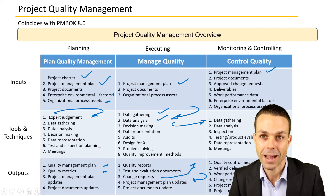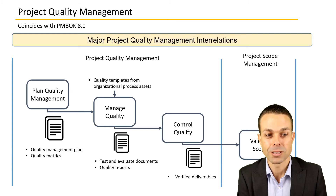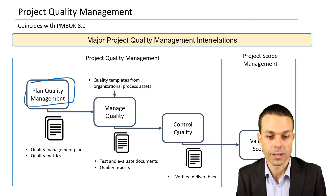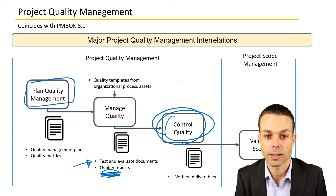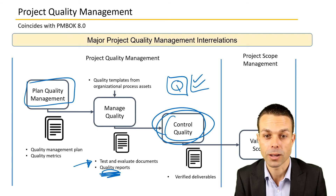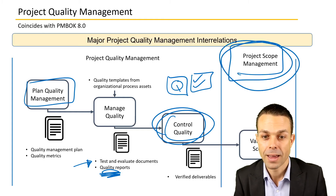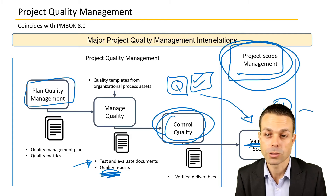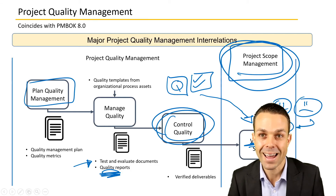Major project quality management interrelations — this is where things can get confusing. Planning quality management is where we plan the process itself. Managing quality is when we're actually testing, with quality reports as an output. That feeds into controlling quality, ensuring deliverables match the customer's specifications. Once done, we go back into the project scope management process group and have the customer validate that scope — confirming it's exactly what they wanted, or triggering a change request process if not.